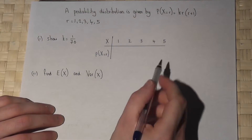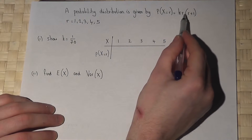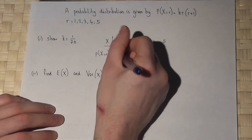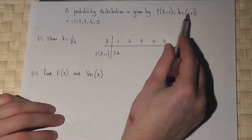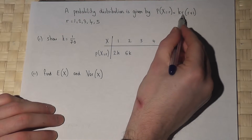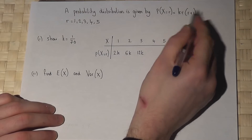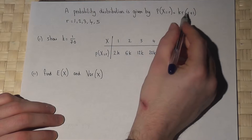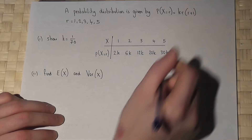The chance that x equals 1 is given by k times 1 times 2, and 1 times 2 is 2, so that's 2k. When x equals 2, 2 times 3 is 6, that's 6k. 3 times 4 is 12, that's 12k. 4 times 5 is 20, so that's 20k. And 5 times 6 is 30, so that is 30k.